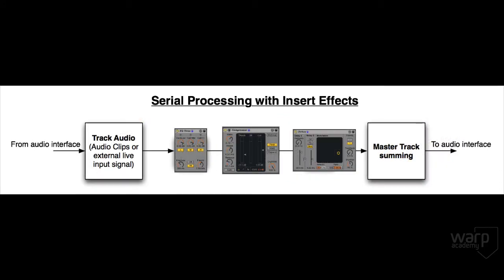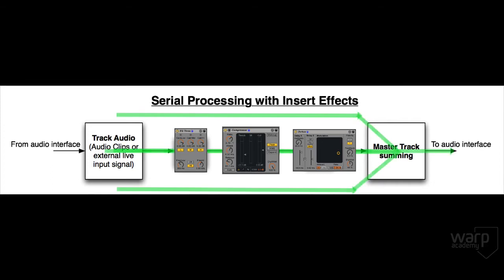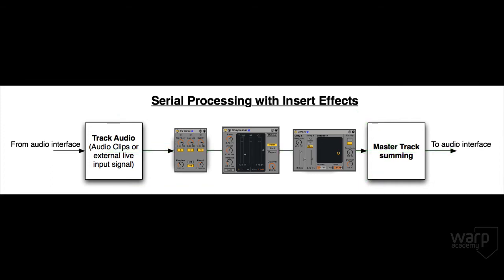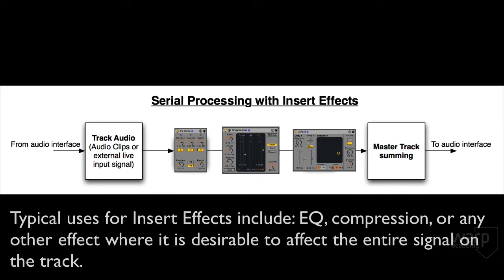In Live, after audio passes out of the last effect on the track, the audio from that track is mixed together with the audio from the other tracks at the master track, where the audio is then output to your sound card, and ultimately to your speakers and your ears. A typical use for an insert effect would be dropping an EQ or a compressor on a track where it is desirable to color the tone or constrain the dynamics of the entire track's output.